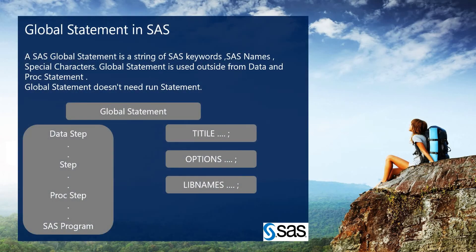Next is the global statement in SAS. A SAS global statement is a string of SAS keywords, SAS names, and special characters. Global statements are used outside of a data step and proc step. Global statements do not need a run statement. Examples of global statements are title, options, and libname.